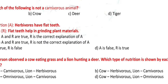Question 6: Which of the following is not a carnivorous animal? a) Lion, b) Crow, c) Deer, d) Tiger.